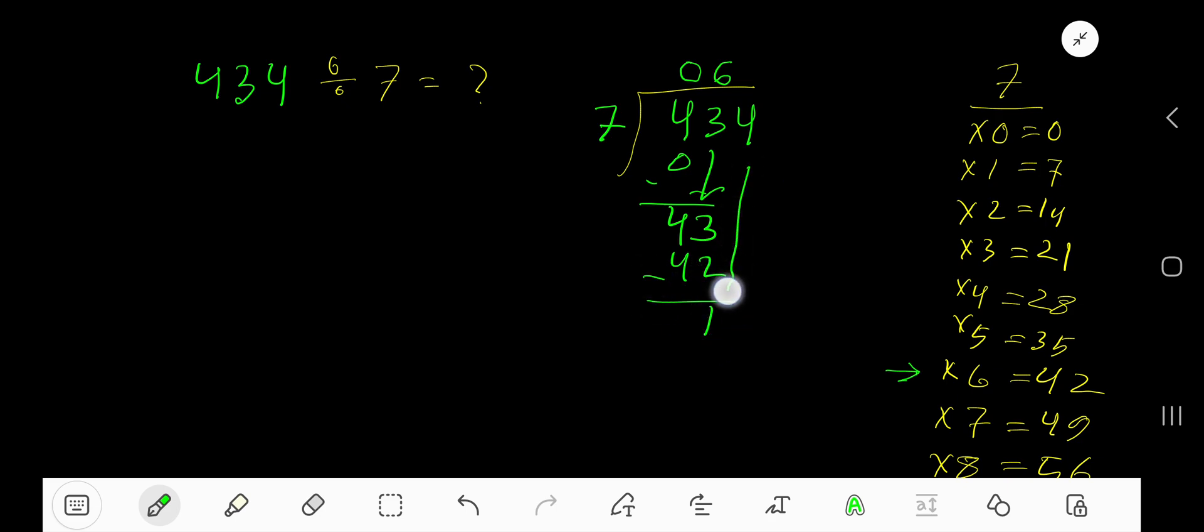Subtract, you are getting 1. Bring down this 4 to get 14. 7 goes into 14 how many times? 7 goes into 14 two times.